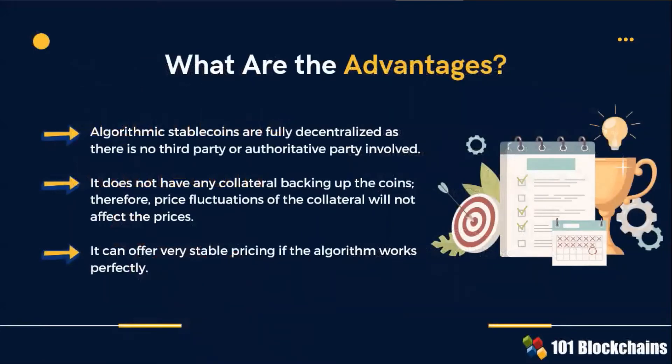What are the advantages? Algorithmic stablecoins are fully decentralized. They are unaffected by price fluctuations of any collateral, as they do not have any. This form of cryptocurrency can offer very stable pricing.